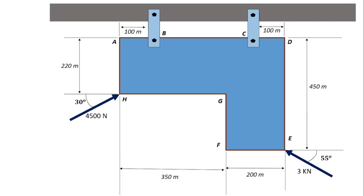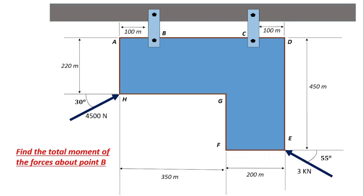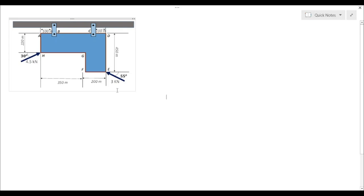We're going to use this example to illustrate how the moment is estimated for a force acting in a two-dimensional plane. We need to find the moment of the forces about point B — that is, the moment of the two forces acting on the system: the 3 kilonewton force and the 4,500 Newton force — about point B.